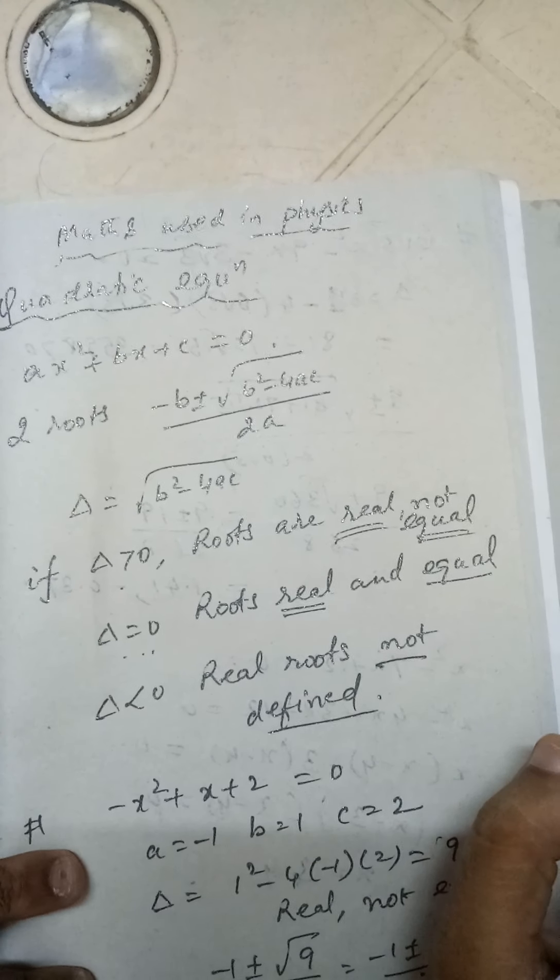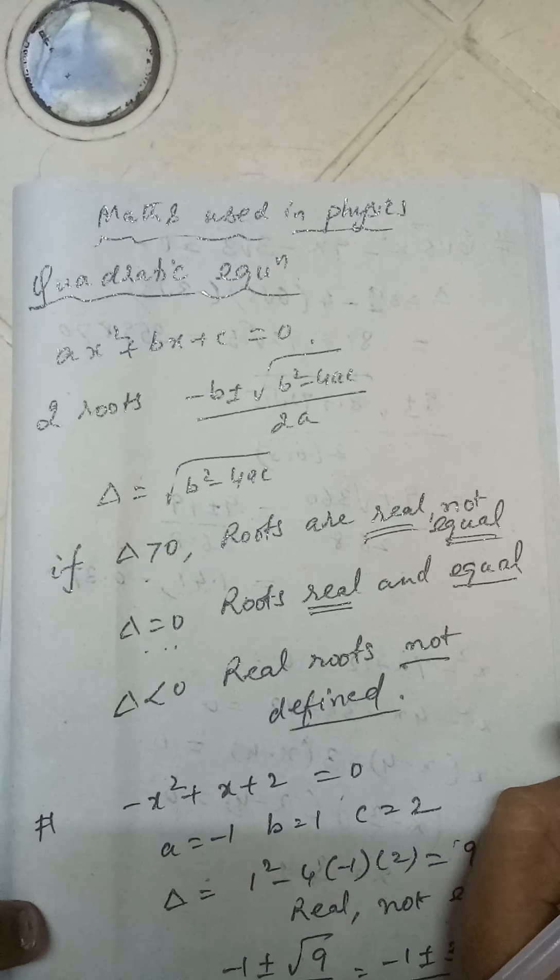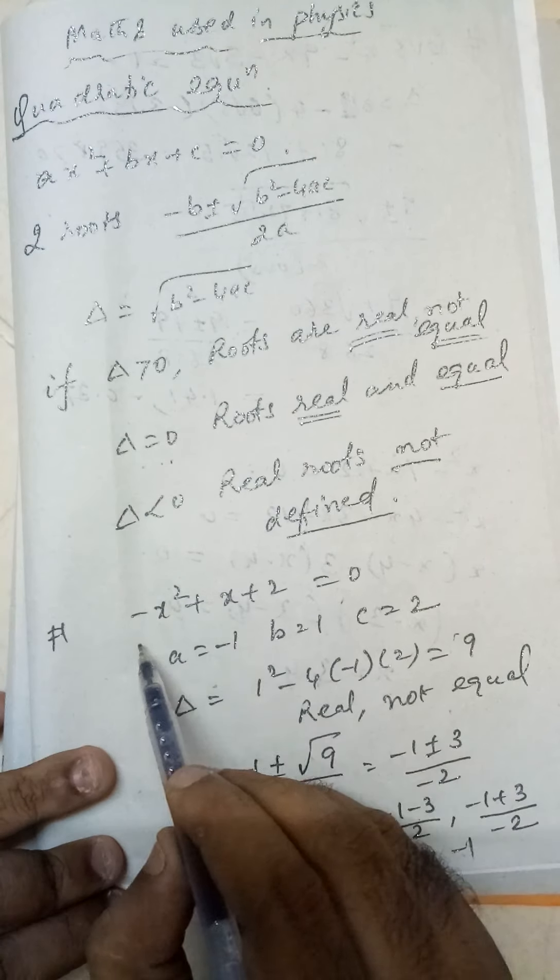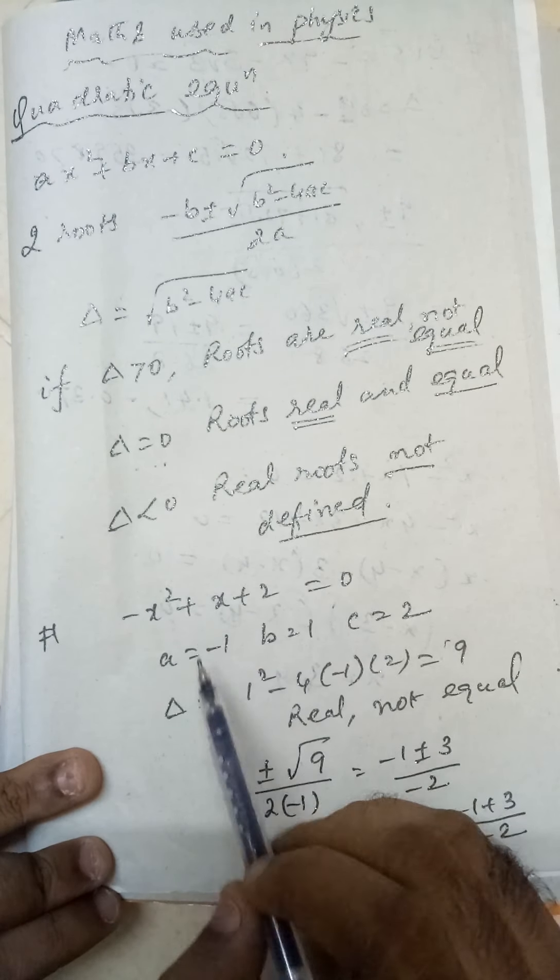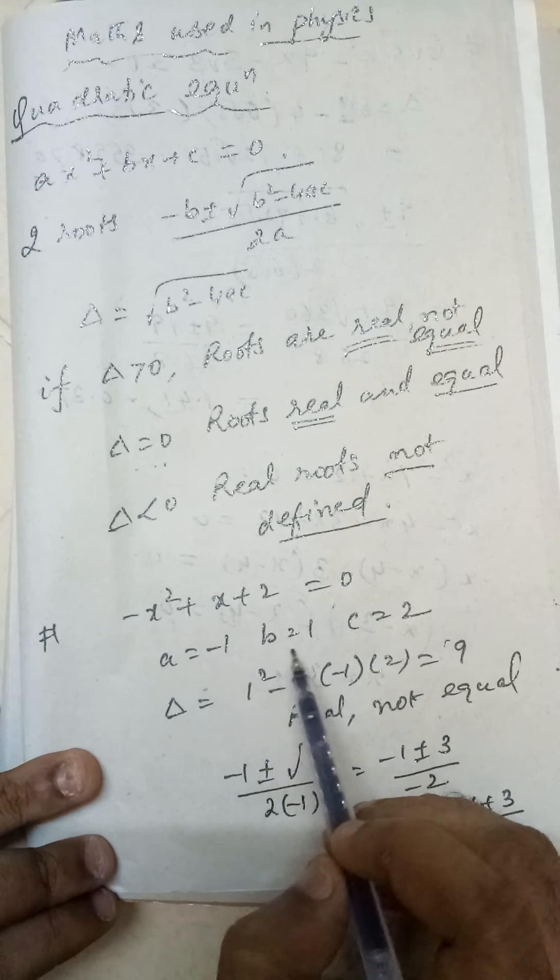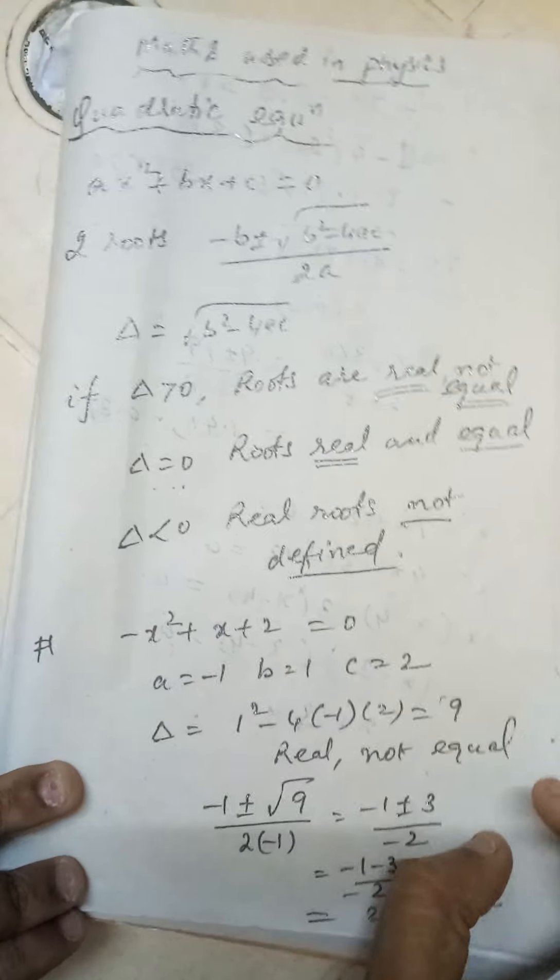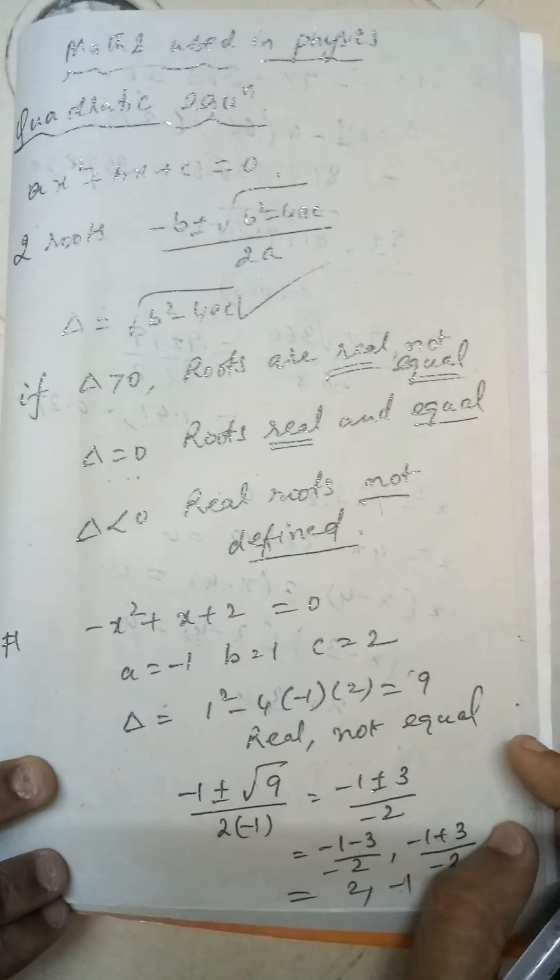Let us see some examples regarding this. The first one: -x² + x + 2 = 0. So you can observe a = -1, b = 1, c = 2. Find out Δ - putting this formula you get 9.